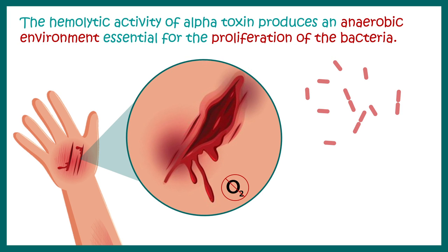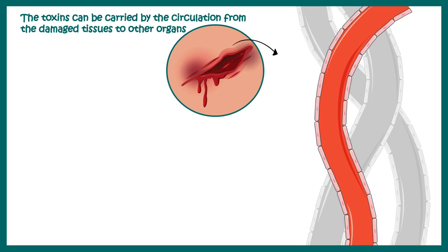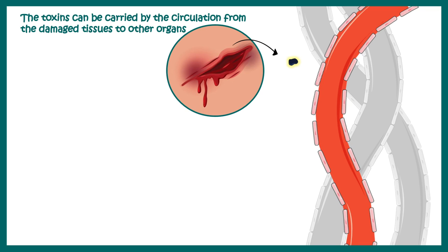The hemolytic activity of alpha toxin is produced in an anaerobic environment, which is essential for the proliferation of these bacteria. They grow in soil and need an anaerobic environment — oxygen is actually harmful for them. Unlike other anaerobic infections, the discharge from this infection is not purulent; there is no pus. Instead, the discharge is a faint yellowish fluid, and this is very characteristic of gas gangrene. The toxins can be carried from one region of the body to another, having a long-range effect.